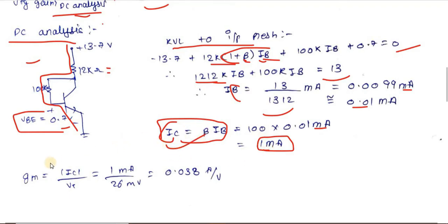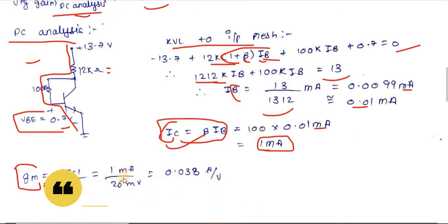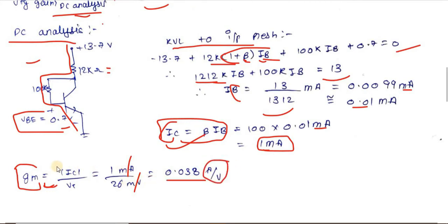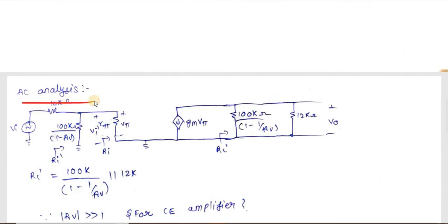Using gm = |Ic|/Vt = 1 mA / 26 mV = 1/26 ≈ 0.038 A/V. So gm = 0.038 S.